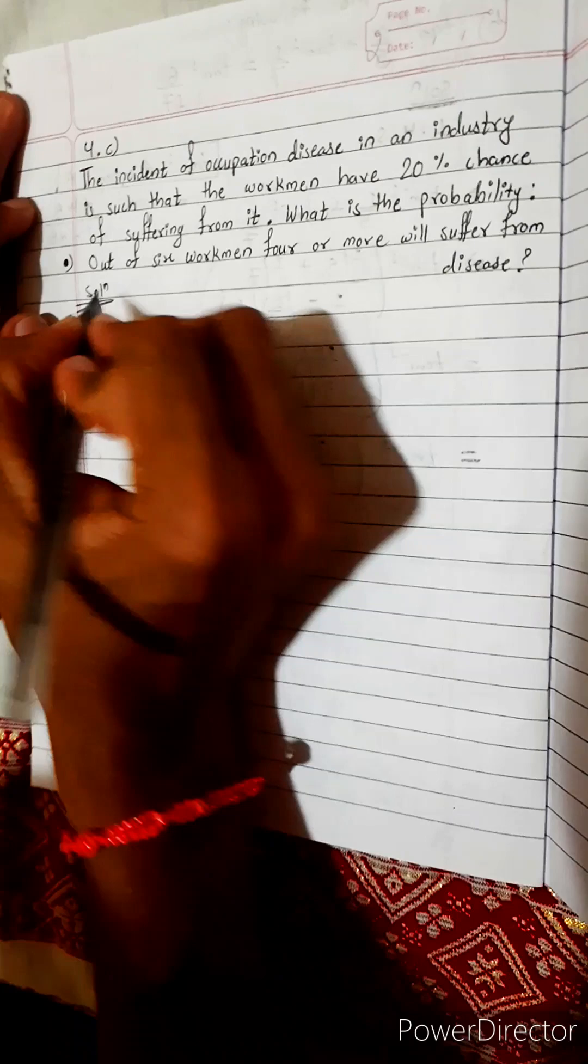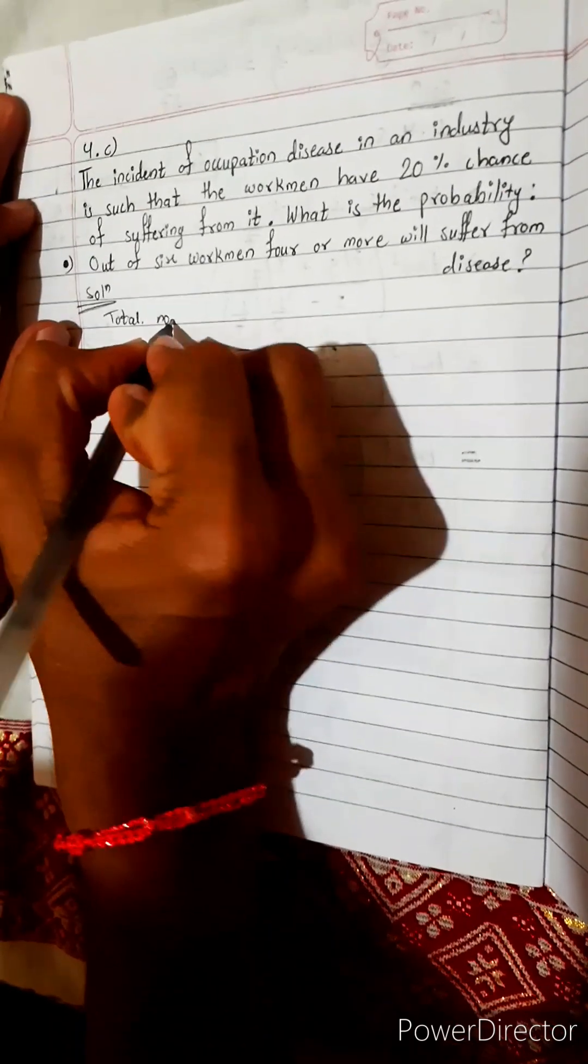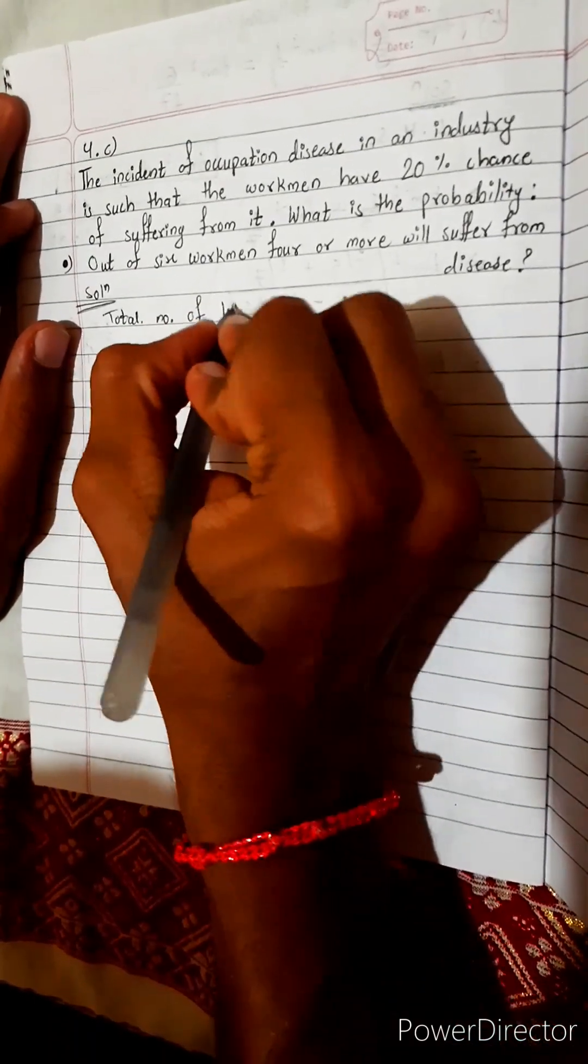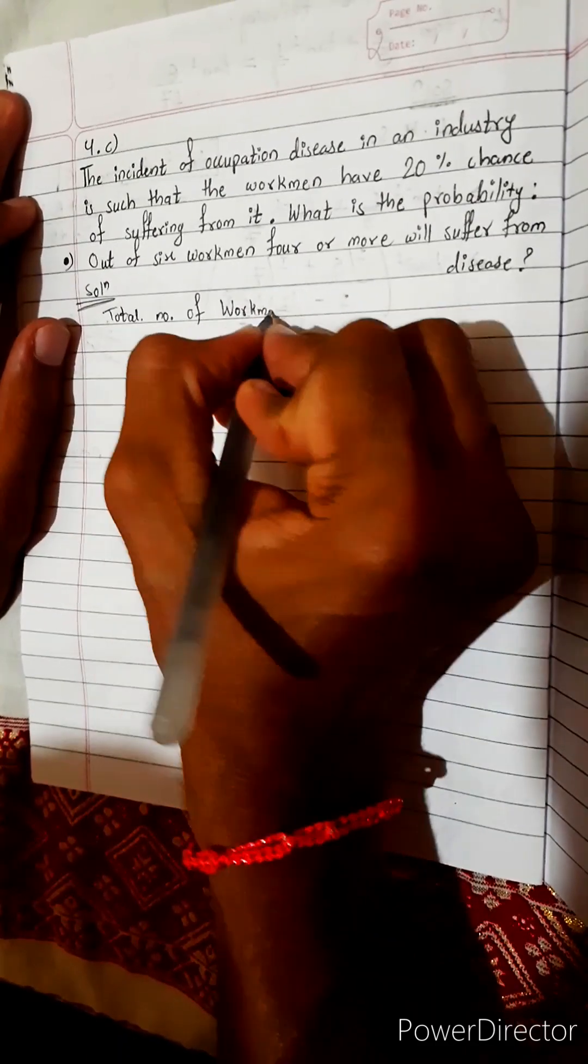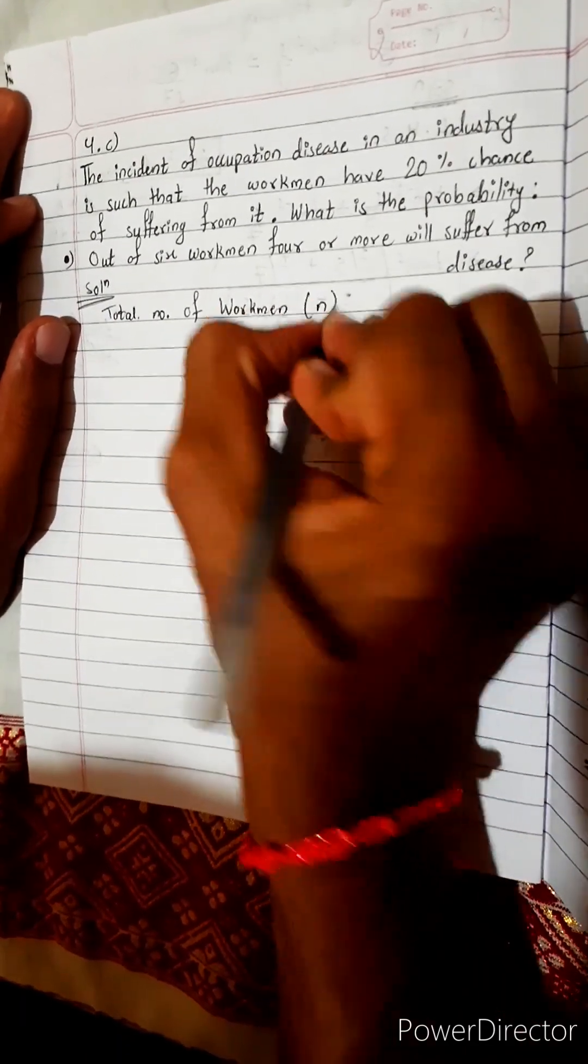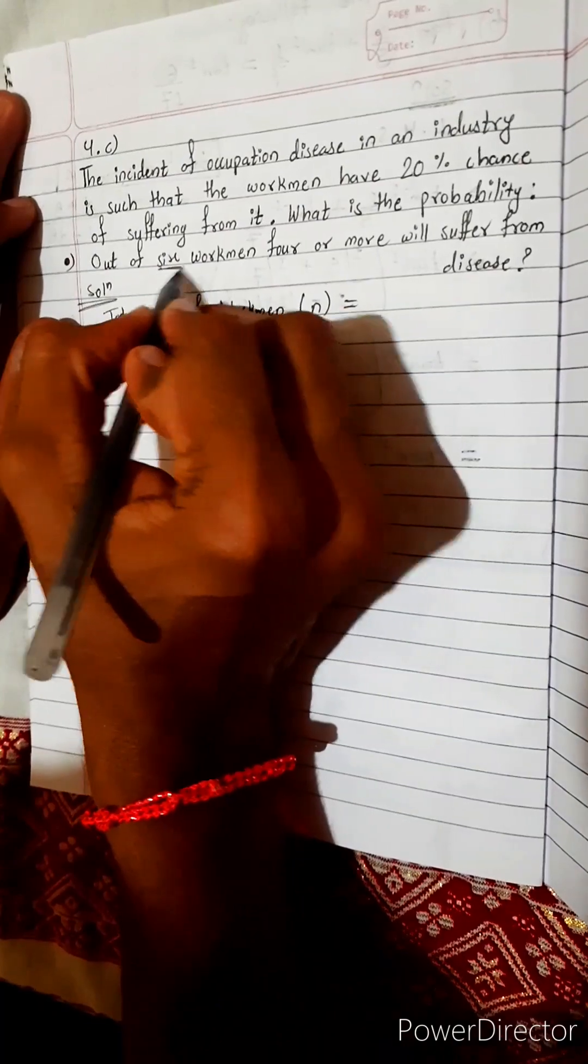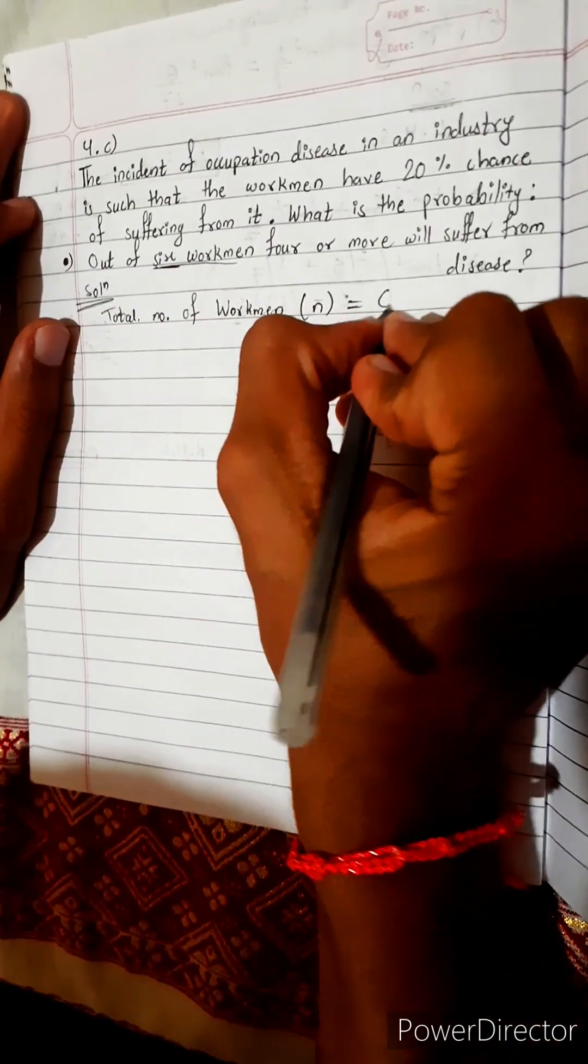We know everything now. Total number of workmen is represented by N. Look here, out of 6 workmen means total 6, so N equals 6.